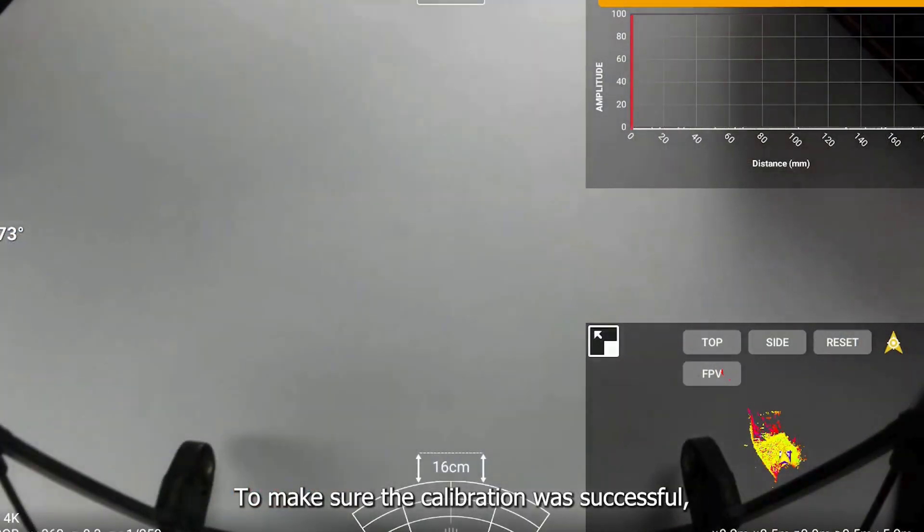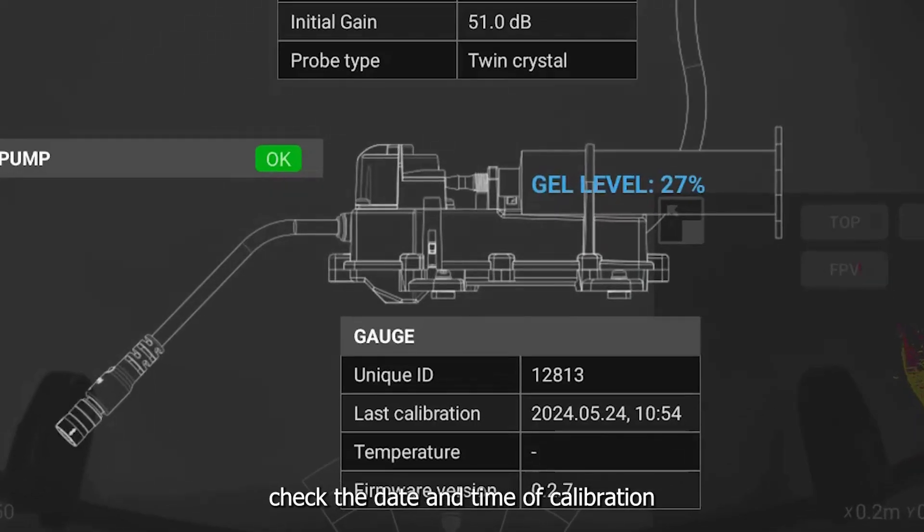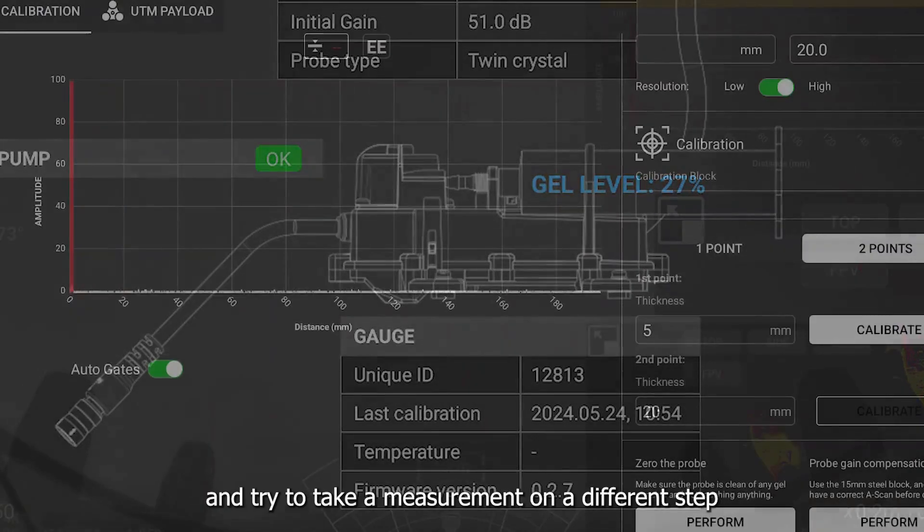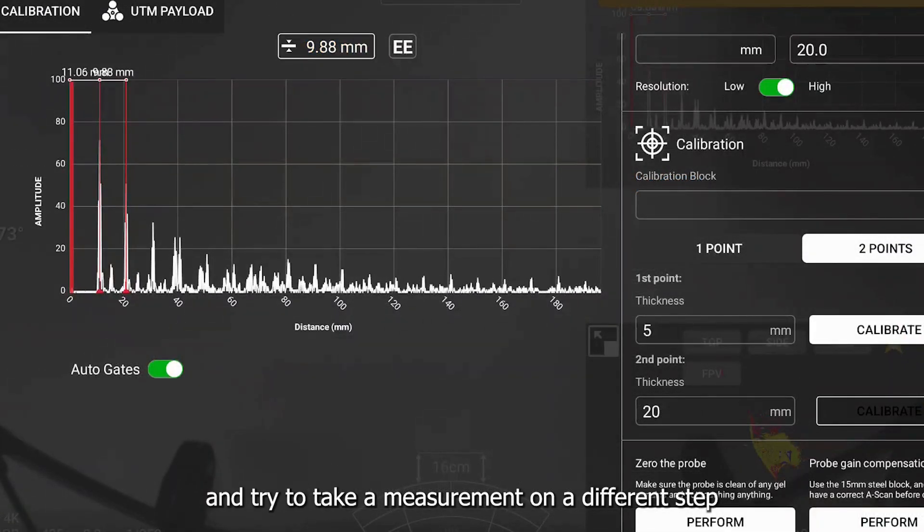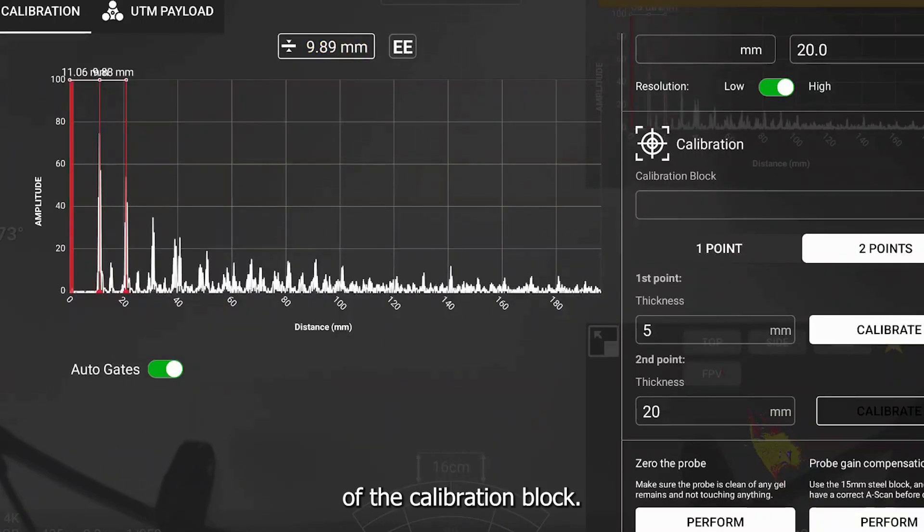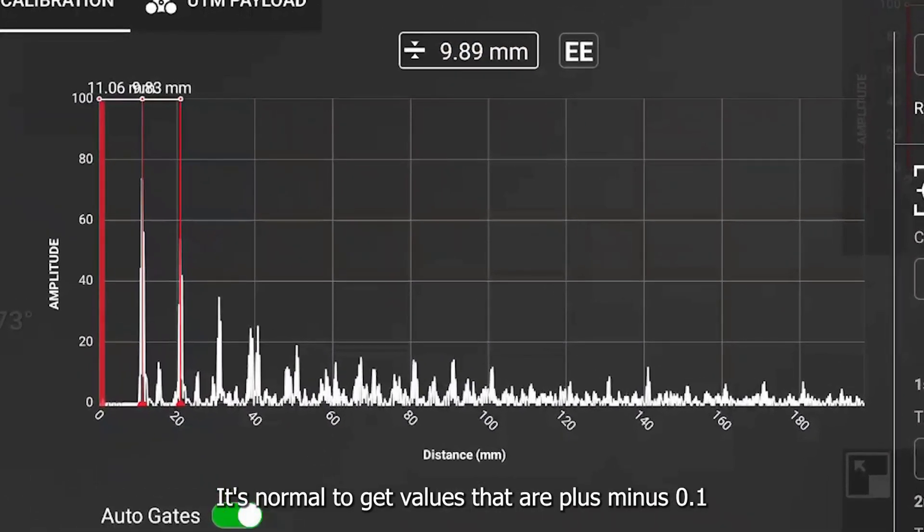To make sure the calibration was successful, check the date and time of calibration and try to take a measurement on a different step of the calibration block. It's normal to get values that are plus or minus 0.1 the expected one.